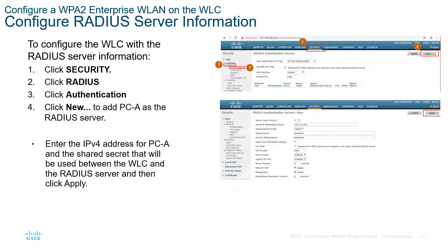To set up a RADIUS server, go underneath Security, go to RADIUS, go to Authentication, and set up new. Add PCA as that device through its IP address, set up the password and the port number — the port number is really important. Make sure to turn it on and ensure that both Network Users and Network Management are checked. We have a lab walking us through all of these steps as well.